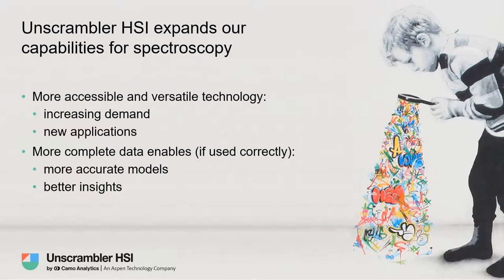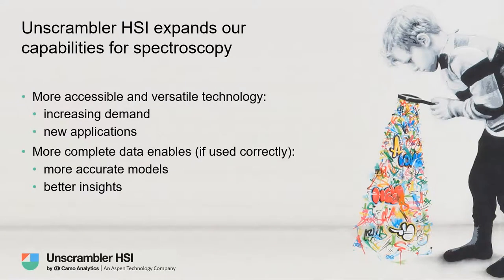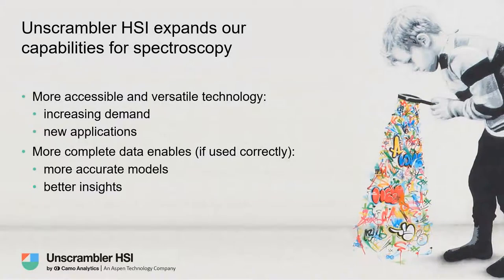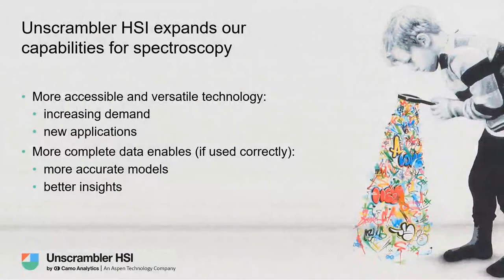So what is Unscrambler HSI? It expands our capabilities for spectroscopy. Hyperspectral imaging has been around for many years, but over recent years it has become more accessible and versatile — these hyperspectral cameras have become much more advanced and diverse. You have everything from small image chips that cost a few thousand dollars to large, highly precise and robust cameras for industrial applications, and even the high-end cameras have become much cheaper and more available. This has led to increasing demand and many new applications.